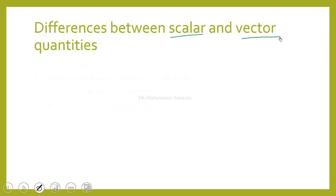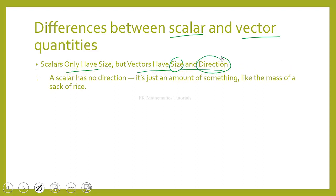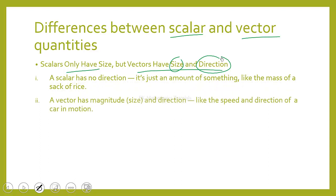Scalars have only size, then vectors have size and direction. A scalar has no direction — it is just an amount of something, like the mass of a sack of rice or a sack of gari. Then we have a vector which has magnitude and direction. The magnitude is the size, so like the speed and direction of a car in motion.